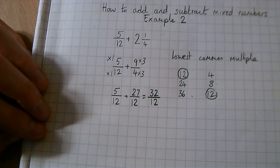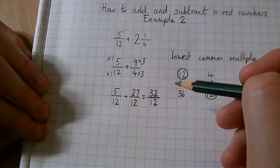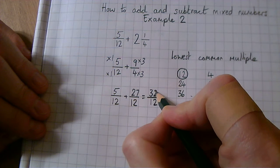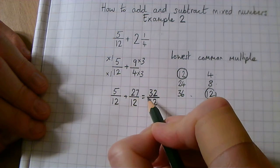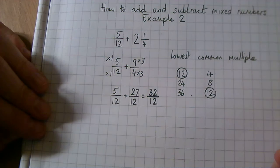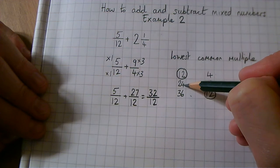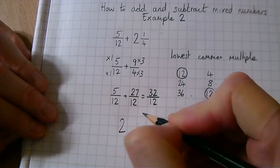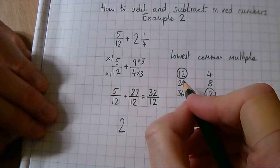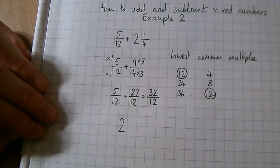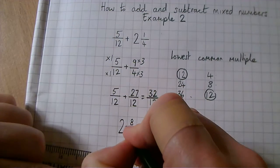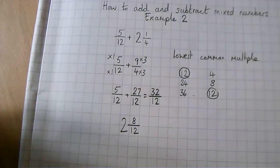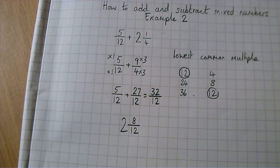So now we're going to change our improper fraction back into a mixed number. To do that we do 32 divided by 12 — remembering that the fraction line means divide. How many twelfths are there in 32? That's 2 whole times. How many left over? Counting from 24 up to 32, the answer is 8. So the remainder is 8 out of 12, with the denominator staying the same. We have a mixed number answer of 2 and 8 twelfths.